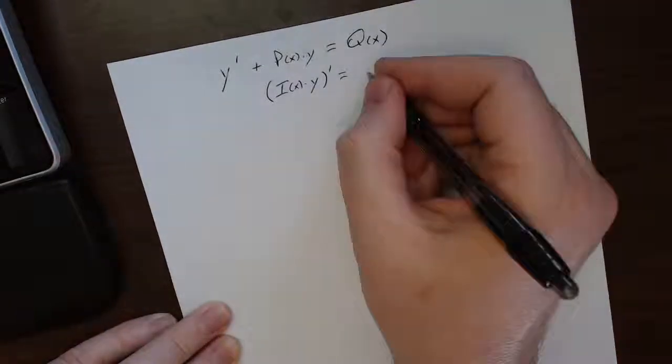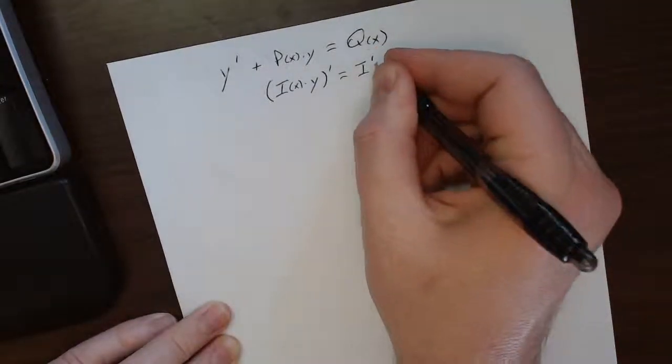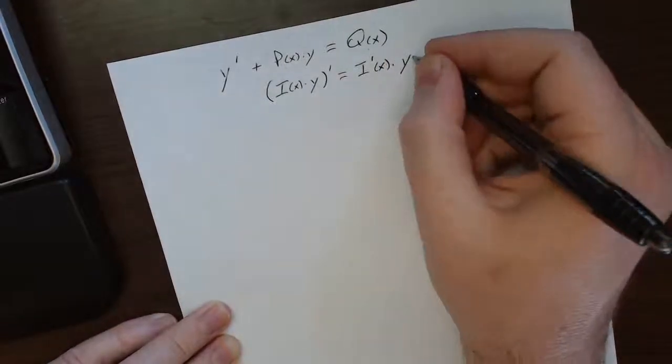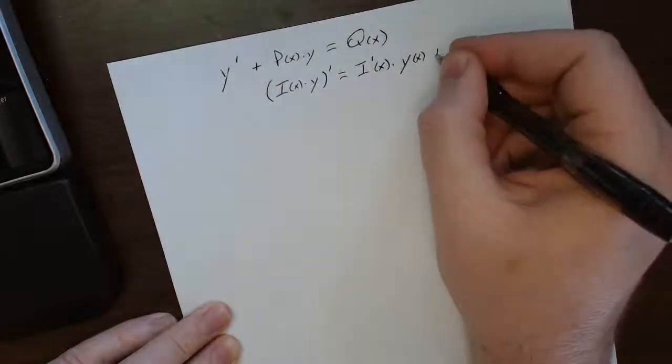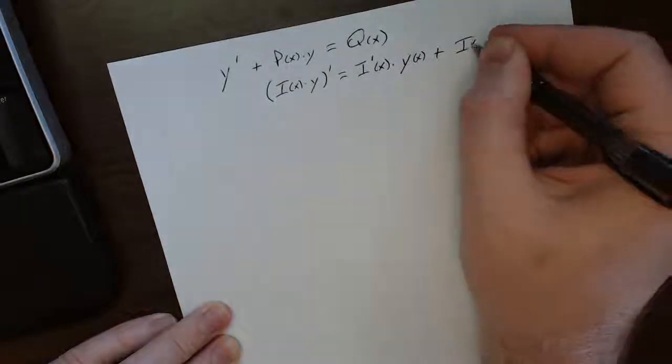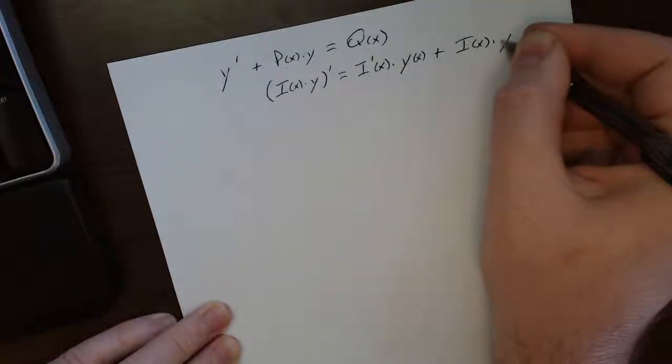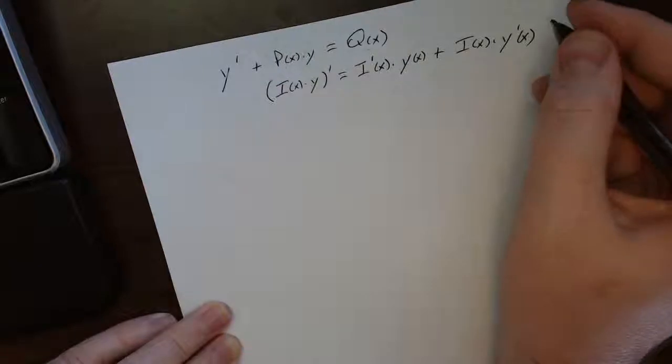Well, that would be i prime of x times y of x, right, plus i of x times y prime of x. Now, check it out.